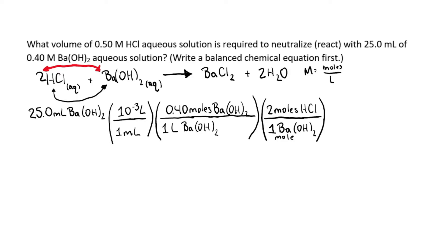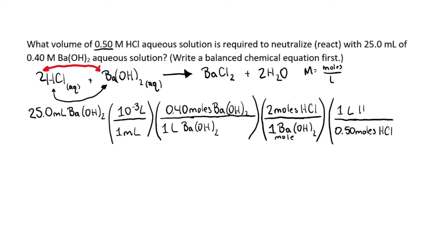Now we're in moles of hydrochloric acid. We need to go from moles of hydrochloric acid to liters using the molarity of hydrochloric acid: for every 0.50 moles of hydrochloric acid, you get one liter of hydrochloric acid. Then convert from liters to milliliters: for every 10 to the negative 3 liters, we get one milliliter.